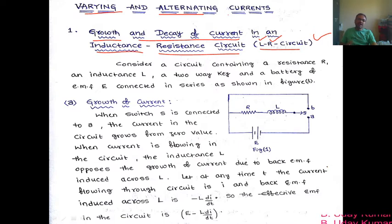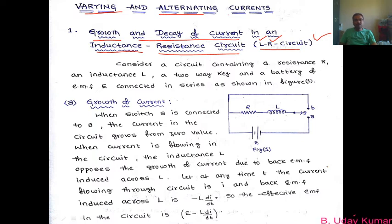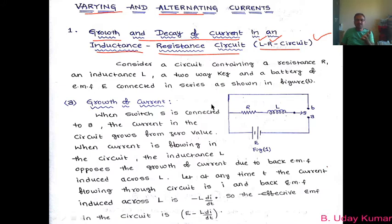Alternating current, which we call AC, is a current whose magnitude continuously changes — not only its magnitude, but even its polarity changes. Such a current is called alternating current. We will study alternating current in detail in later topics. Varying current is the one whose magnitude doesn't remain constant; it changes continuously with respect to time. The first topic in varying current is the growth and decay of current in an LR circuit.